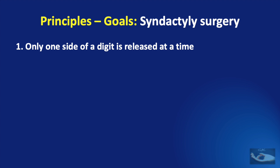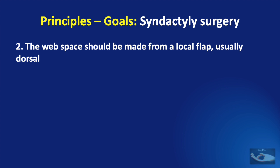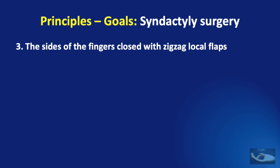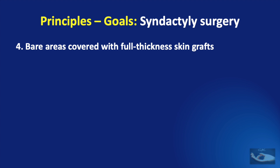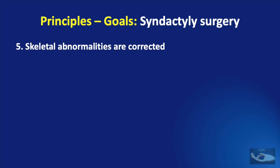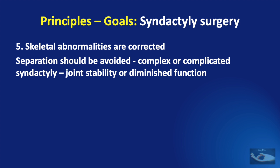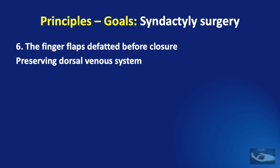Second, the finger web space being created on release of the two fused fingers should be made from a local flap, usually taken from the dorsal side. Third, the sides of the fingers should be closed with zigzag local flaps. Fourth, the resultant bare areas after release of the syndactyly should be covered with full thickness skin grafts. Fifth, the skeletal abnormalities should be corrected; however, if it is a complex syndactyly in which joint stability or function may be compromised, surgery should be avoided. Sixth, the finger flaps raised should be defatted before closure, making sure to preserve the dorsal venous system, and fine absorbable sutures should be used for skin closure.